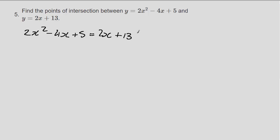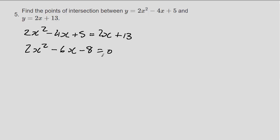Moving all terms to the left-hand side: 2x squared, then minus 4x minus 2x gives minus 6x, and plus 5 minus 13 gives minus 8, so 2x squared minus 6x minus 8 equals 0. There are two ways to solve quadratic equations: either you can see the answer, or you use the quadratic formula. First, divide through by 2 since it's a factor of all coefficients, giving x squared minus 3x minus 4 equals 0.